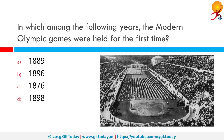In which among the following years were the modern Olympic Games held for the first time? The correct answer is 1896. For the first time, the Olympic Games were held in 1896 as the Summer Olympics. Every four years we still have the Summer Olympics.